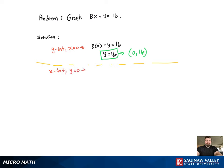So the x intercept is at y equal to 0. We get 8x plus 0 equals 16. Divide by 8, get x equal to 2. And that corresponds to the point 2 comma 0.